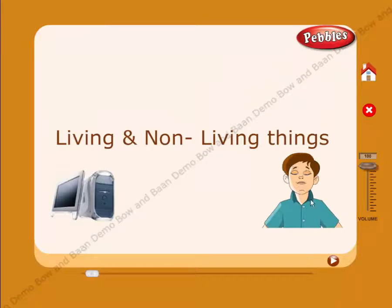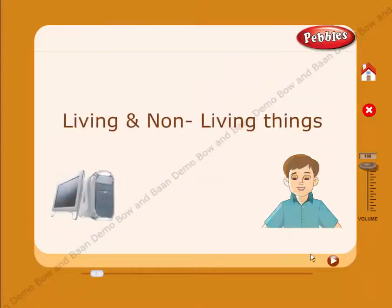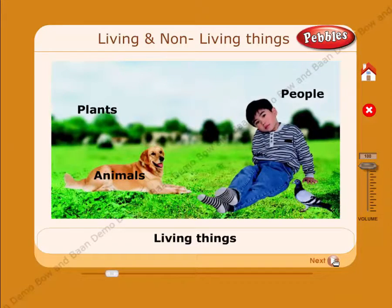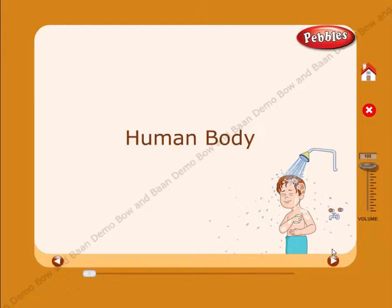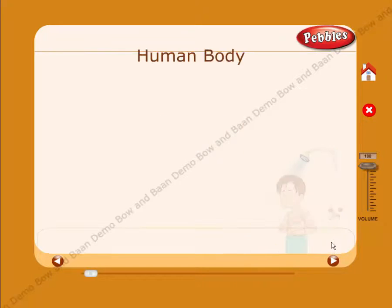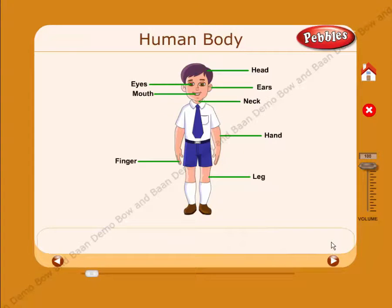Living and non-living things. People, animals, and plants are living things. They are all natural things.